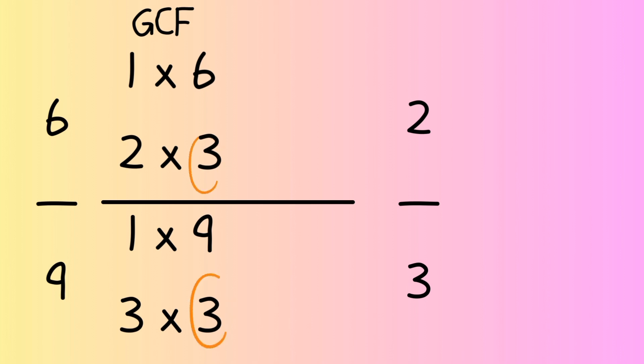So if you look at the common factor in both of these, it's the 3. So what will multiply times 3 to get 6, a 2? So that's going to be the top number. And then on the bottom, we already said that 3 would multiply times 3 to make 9. So the answer is 2 thirds.